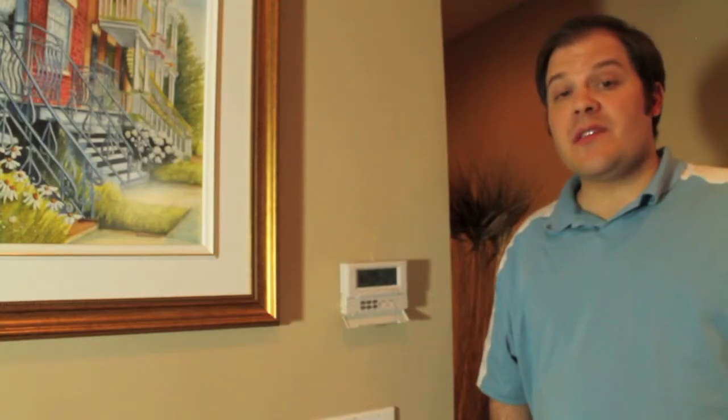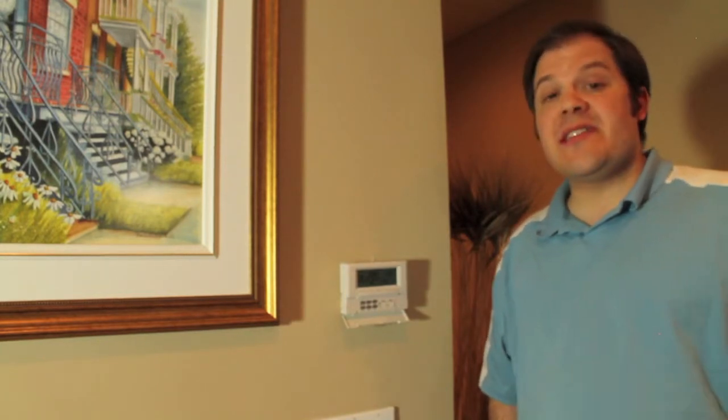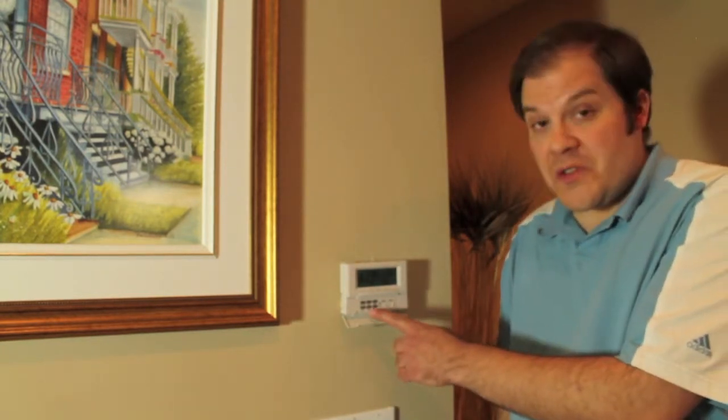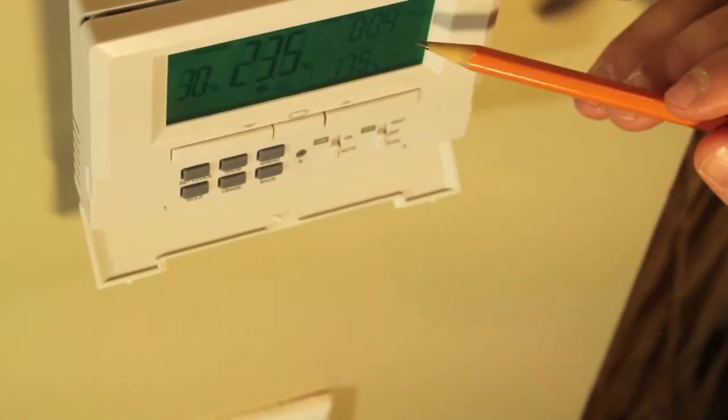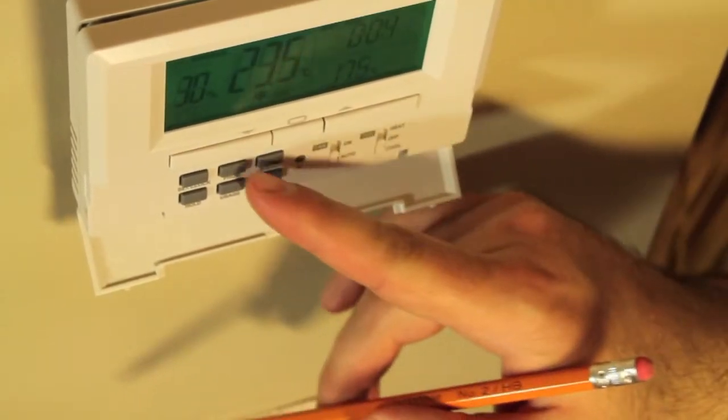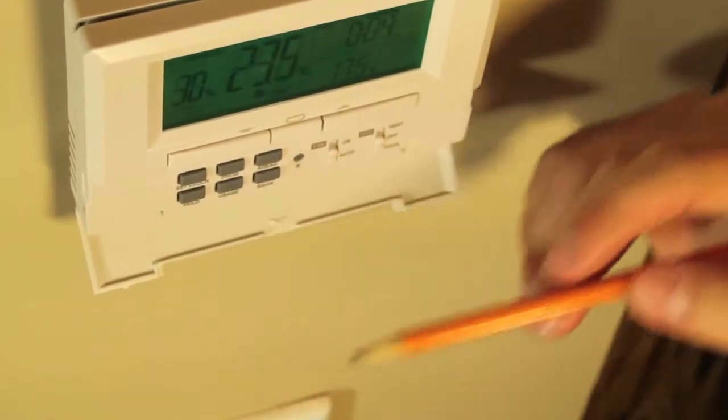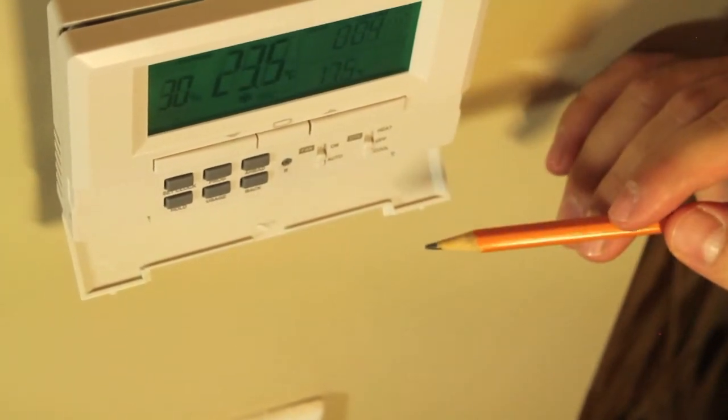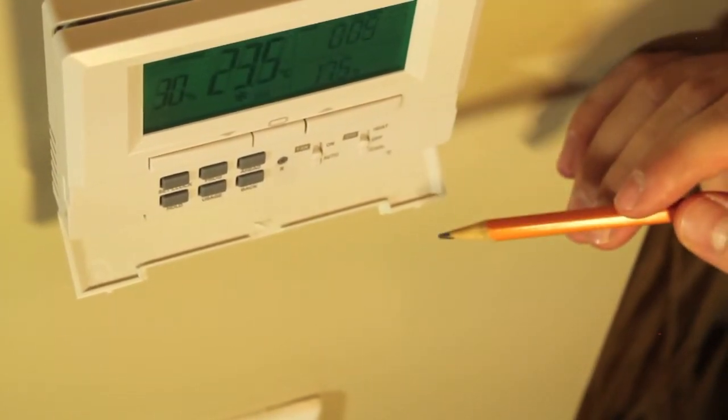Now we're going to talk about some of the special features of the M6007. First you'll notice that it has a button labeled usage. The thermostat will display in the clock area the number of hours and minutes it's run today. If you press this button a second time, it will display the number of hours and minutes the thermostat has run the heating or cooling since midnight on Sunday night.